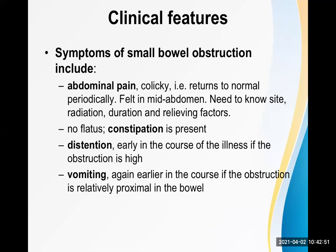Now let's talk about clinical features. The four cardinal clinical features of intestinal obstruction are abdominal pain, constipation, abdominal distension, and vomiting. The abdominal pain is colicky in nature — periodic, on-and-off pain that comes and goes within a few minutes.